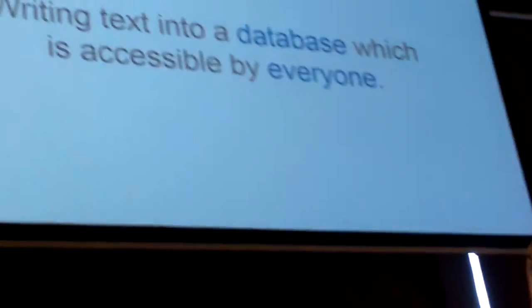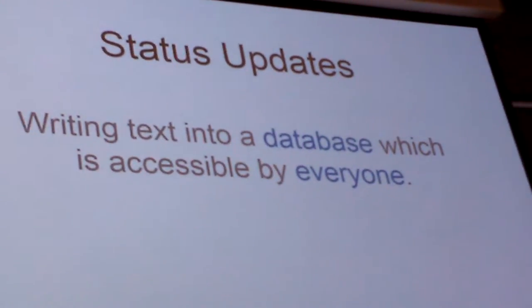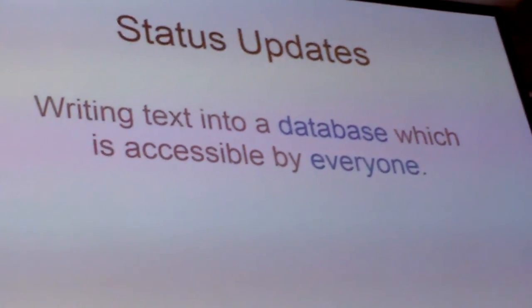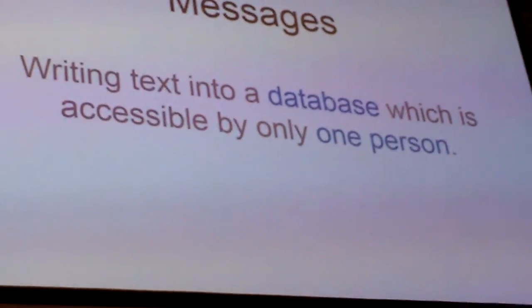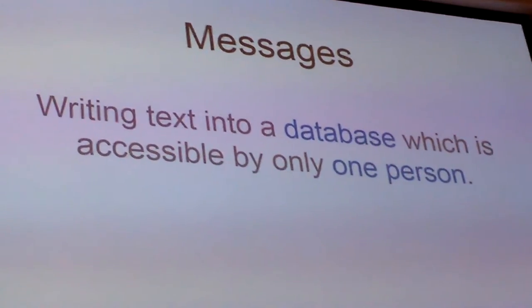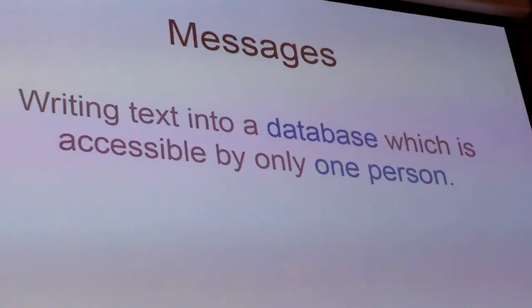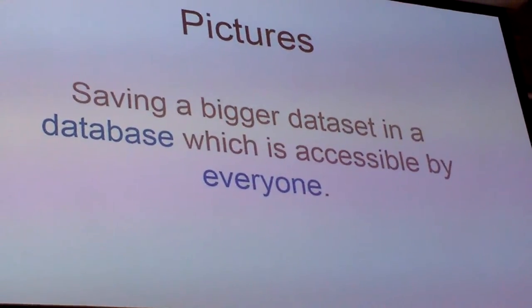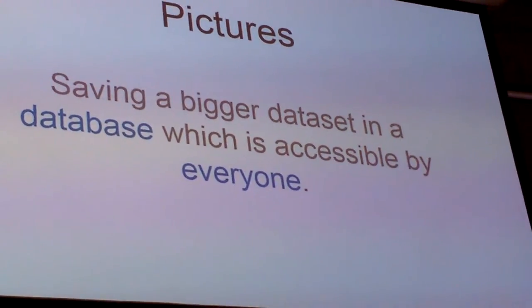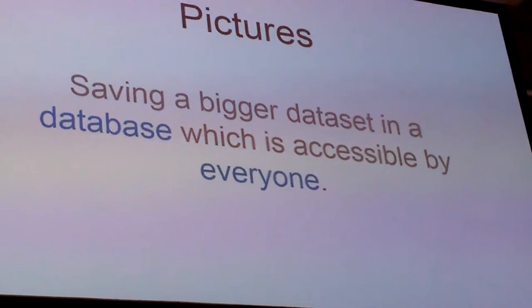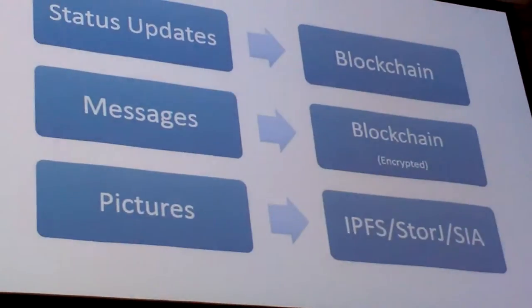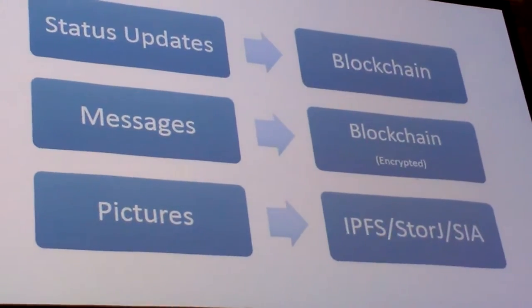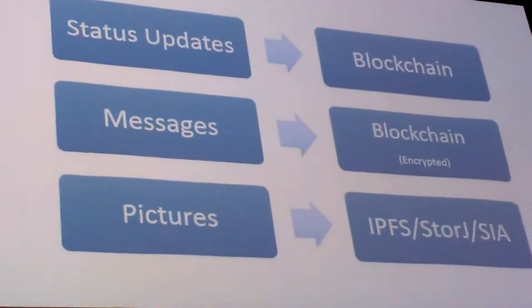In the case of status updates, you're simply writing text into the database which is accessible by everyone. Messages are the same, but now the content shouldn't be accessible by everyone — only by one person. Pictures are a little bit bigger: they're not text, they're full images, and they might be several megabytes. They're also accessible by everyone. In terms of status updates, you can simply save them on the blockchain. For the blockchain app, you can use a sidechain for that.